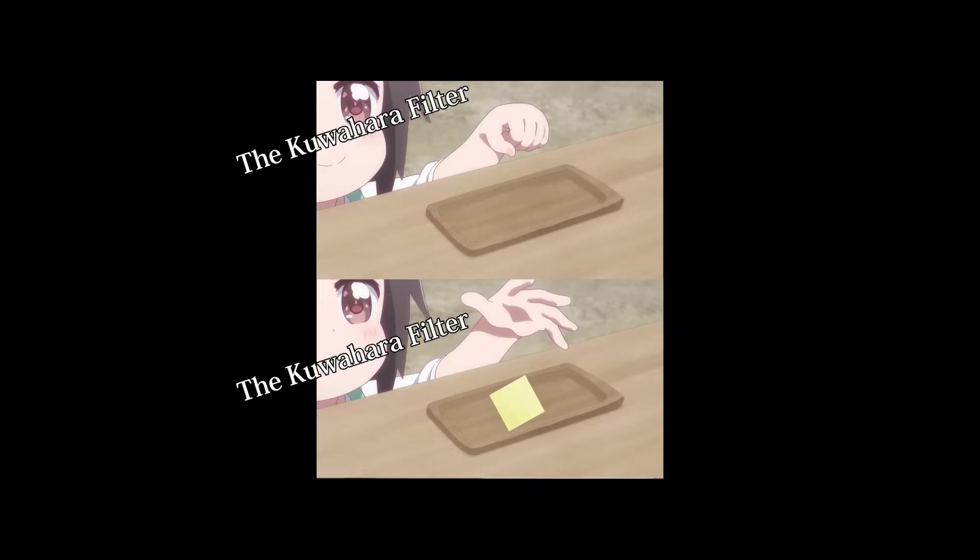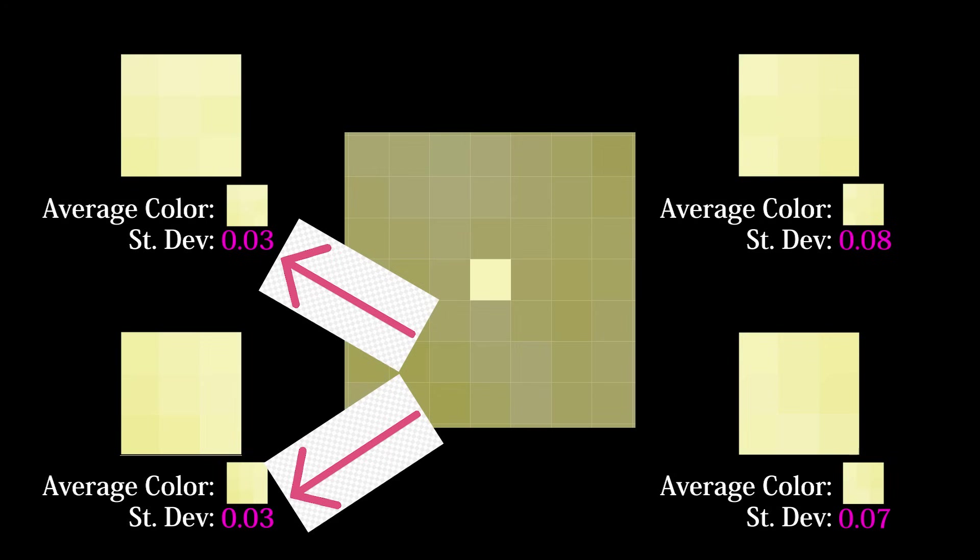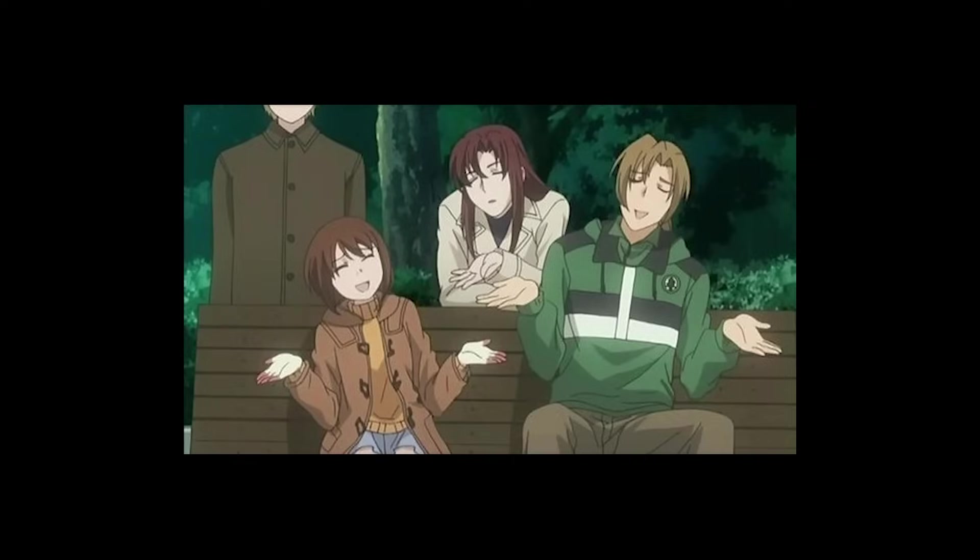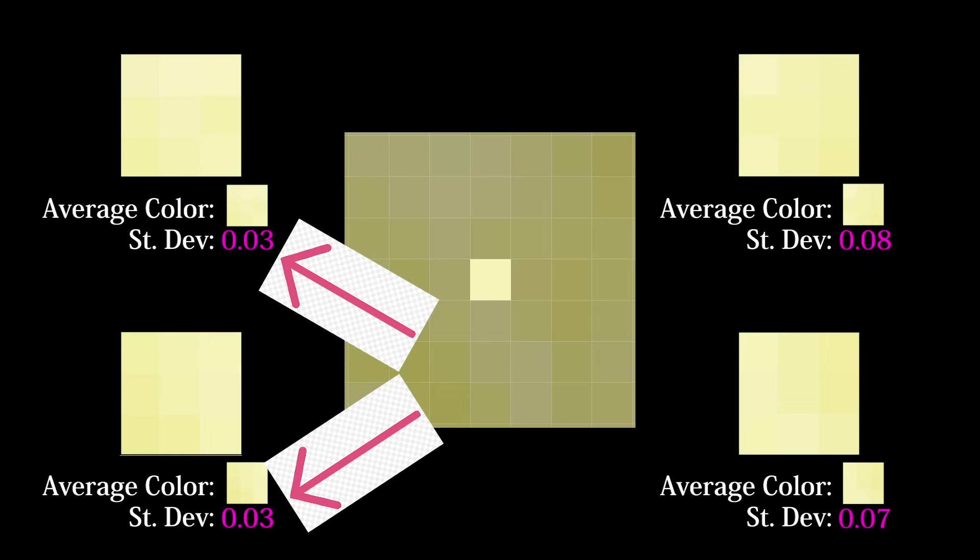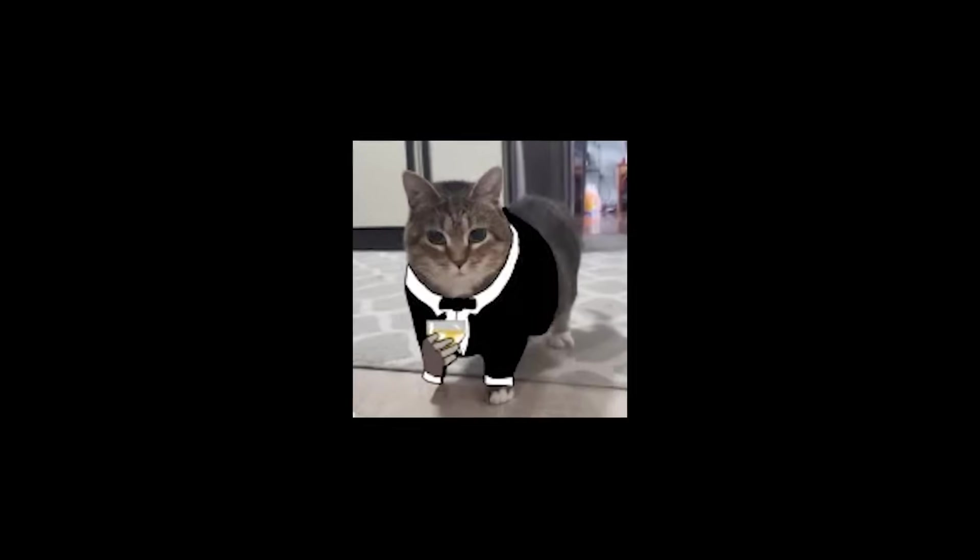The last change Papari's team made to the original Kuwahara filter was how it determines the final color output. Previously, we would set the pixel to the average color of the sector with the lowest standard deviation, but what happens if two sectors have the same standard deviation? No one knows! The outcome is indeterminate. The GPU will randomly choose one of the sectors which causes flickering when the effect is used in real time. Obviously, this is unacceptable, but to fix it, we need to get a bit more sophisticated.